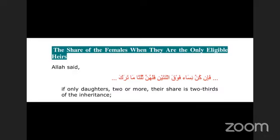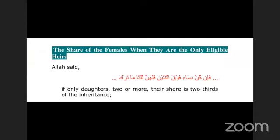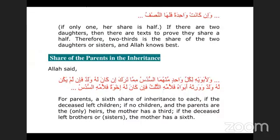The share of females when they are the only eligible heirs: if only daughters — two or more — their share is two-thirds of the inheritance. Nothing in the Quran is useless or redundant. If daughters are two or more, the ruling that they get two-thirds was derived from this ayah, and from the hadith in which the Prophet commanded that two-thirds be the share of the two daughters of Sa'd bin al-Rabi'. If only one daughter, her share is half. Two-thirds is the share of two daughters or sisters, and Allah knows best.